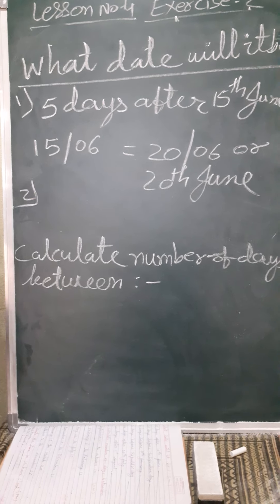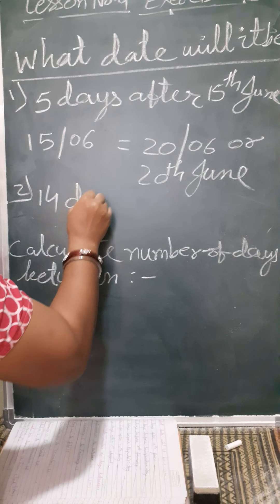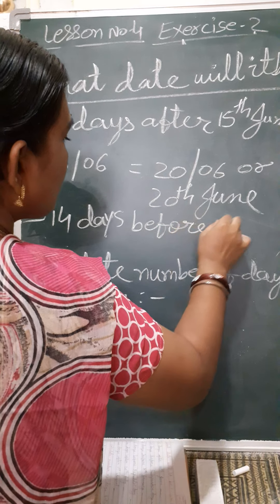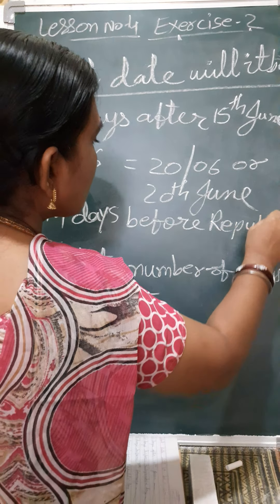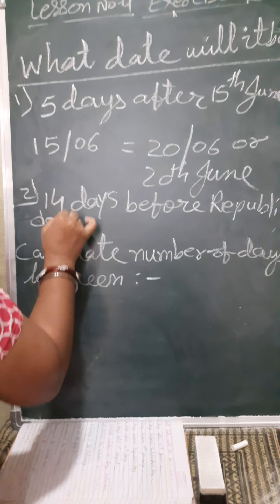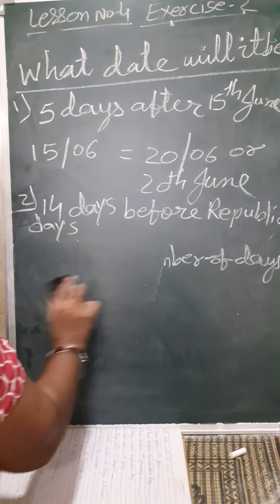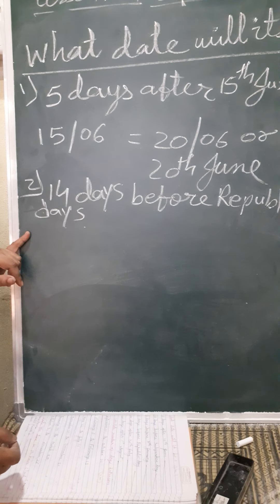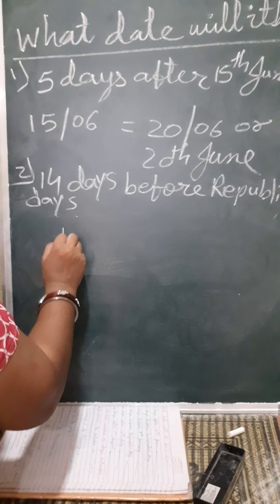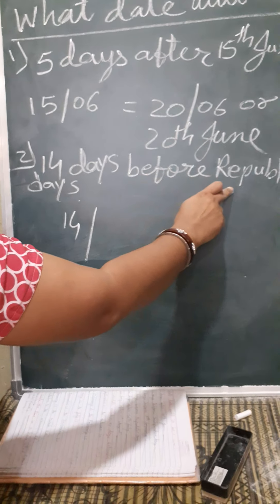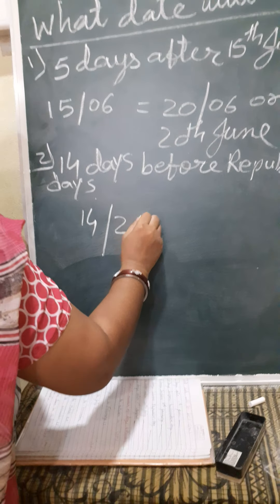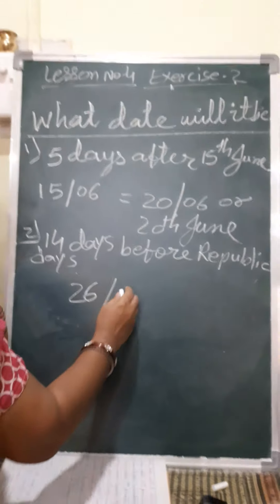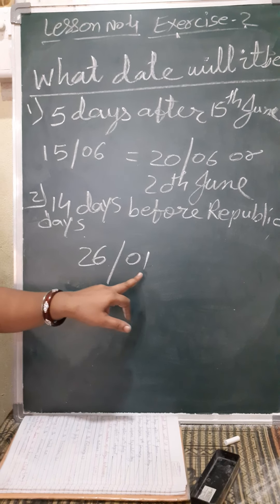Another example: 14 days before Republic Day. Now you know Republic Day means 26th January — yes, when is our Republic Day? 26th January. So it is definitely 14 days before. 26th January — that means month is 01, yes, January month is 01.